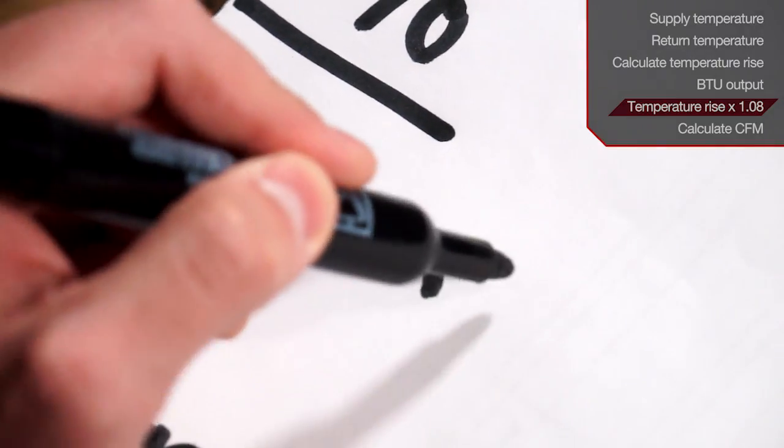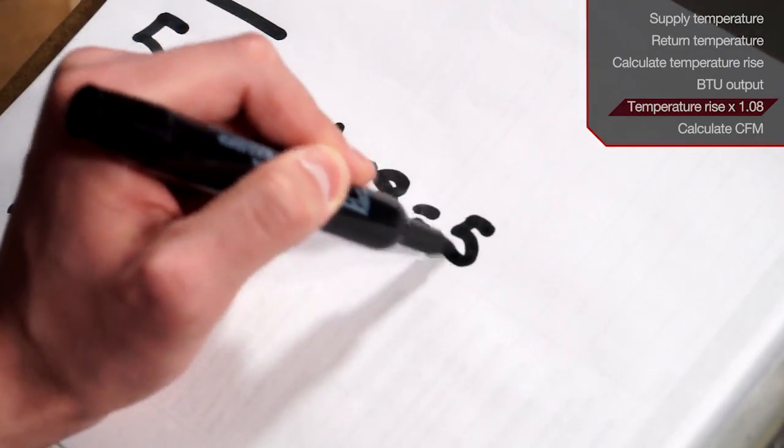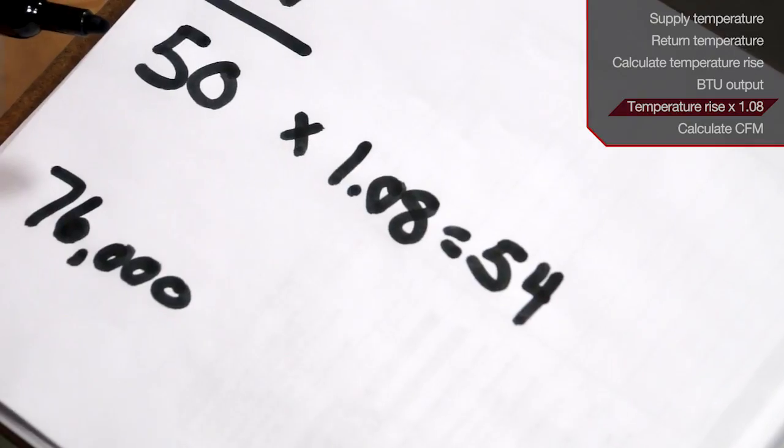Next, you'll take your temperature rise times 1.08. In our example, 54.